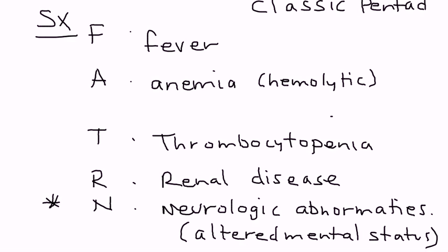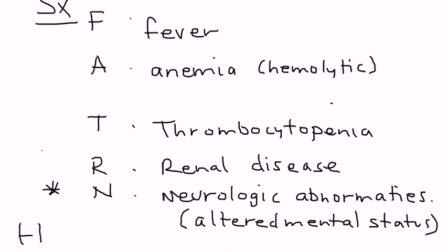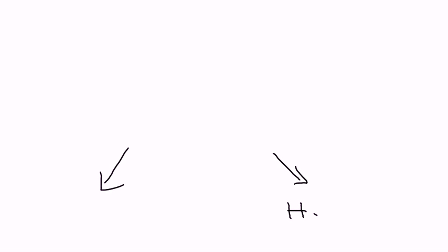What's very important is that there's another medical condition that has pretty much the same classic pentad, and that is hemolytic uremic syndrome, or HUS. On licensing exams, they'll give you a clinical scenario and then give you both TTP and HUS as answer choices, and you can get confused as to which one it is.